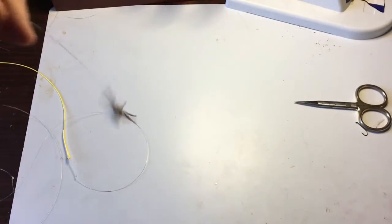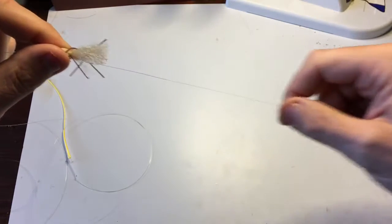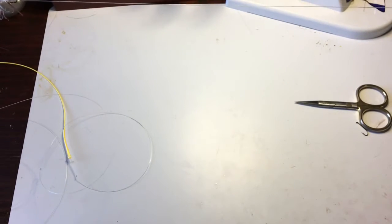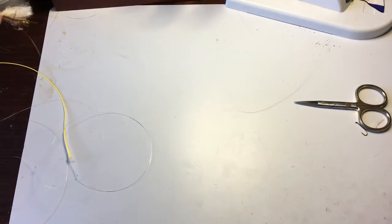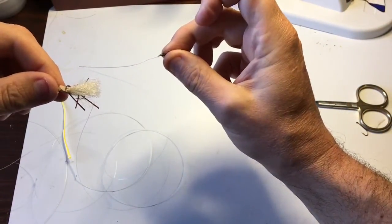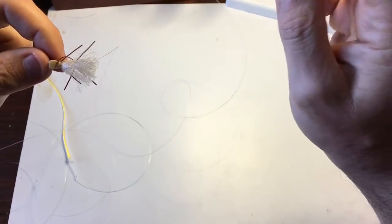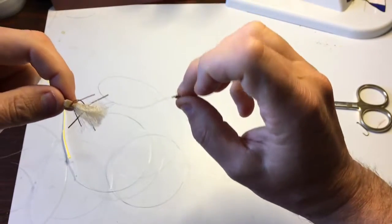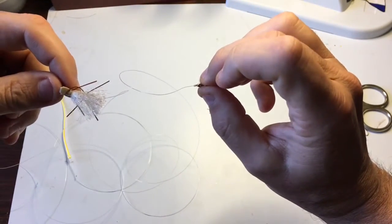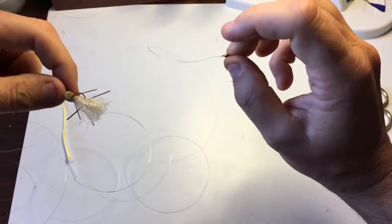Our tippet section is going to go to our first fly here. And then we're going to drop two to three feet of tippet below that to our second fly right here. That's the dry dropper connection leader setup that I use when I'm out on the water, when I'm out guiding. This is the standard setup.